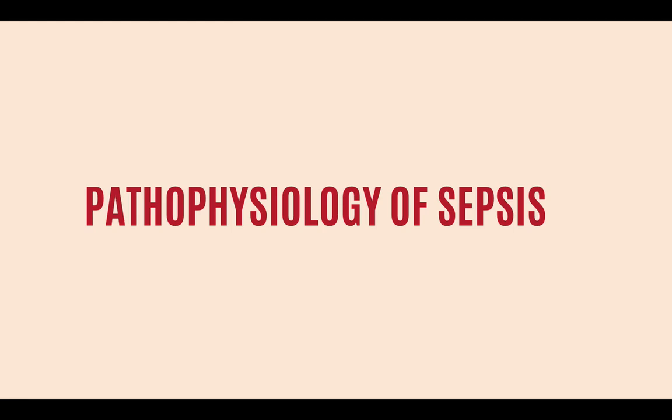Welcome to the second part of the sepsis lecture. In this part we're going through the pathophysiology of sepsis — why it occurs. Two patients admitted with community acquired pneumonia: one develops sepsis and one won't, and we don't fully understand why. Factors that could play a role include the type of pathogen, how virulent it is, the number of pathogens present, where they are located, and the individual host factors determined by the patient's genetics and any conditions predisposing them to infection or a dysregulated host response.